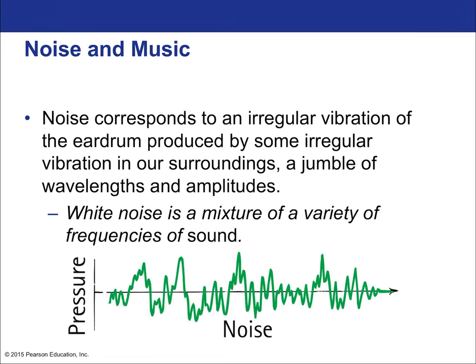Noise corresponds to an irregular vibration of the eardrum produced by some irregular vibration in our surroundings — a jumble of wavelengths and amplitudes. It's many many different tones, many different frequencies, many different wavelengths. White noise is a mixture of a variety of frequencies of sound, and there are different types of white noise. There's also things called pink noise, and it all has to do with the overall structure of that noise.